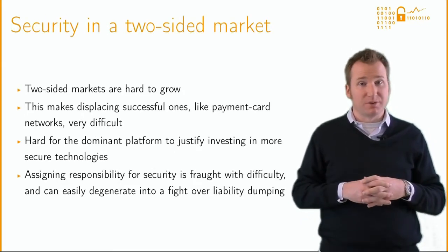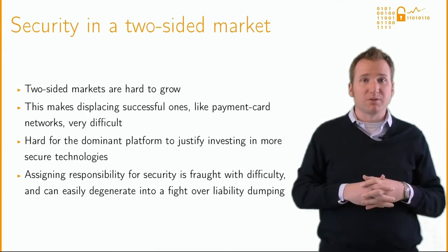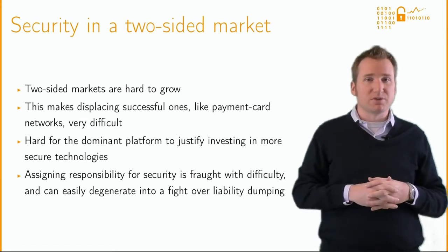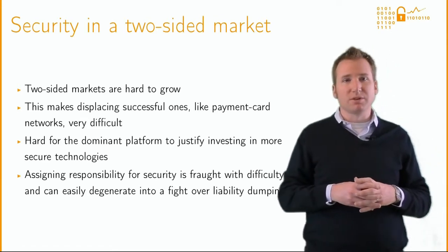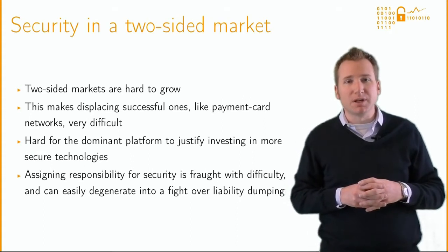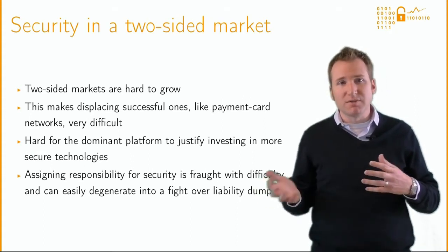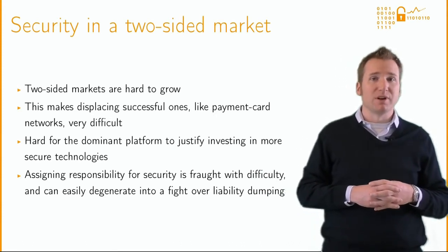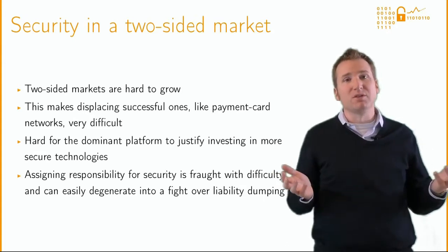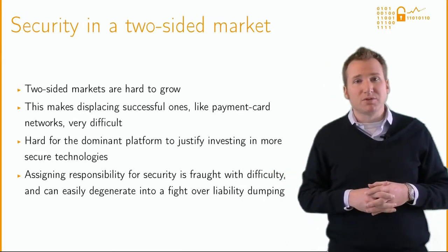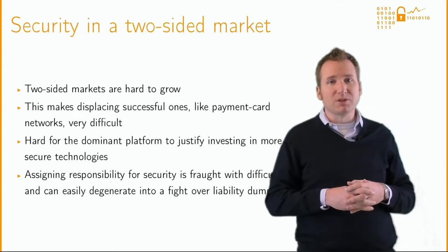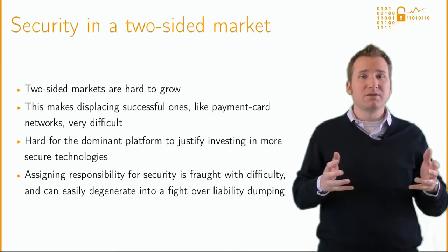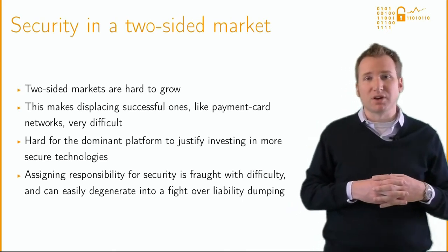Two-sided markets are very difficult to grow. Once you have successful platforms in place, displacing them can be very difficult. This has substantial implications for security. In particular, it becomes harder for the dominant platform to justify spending money to deploy more secure technologies even if customers demand it. MagStripe technology used in credit cards is not very secure — the static numbers can be easily copied, as we've all read about in the news. People have known this for decades. Many proposals have been made to improve security, including alternative payment platforms with greatly improved security, and yet none have really managed to threaten the dominant position credit card networks have.